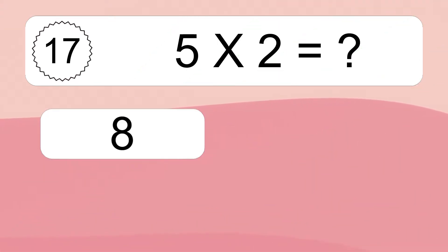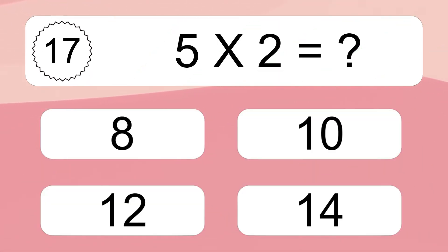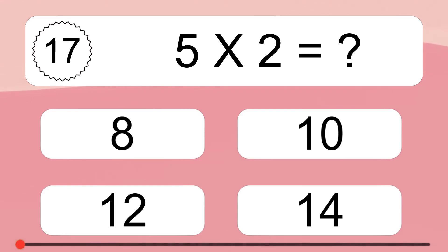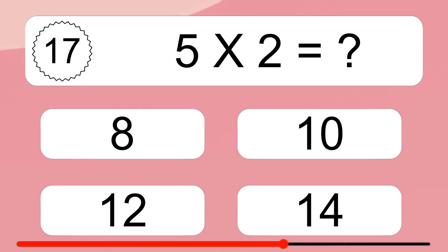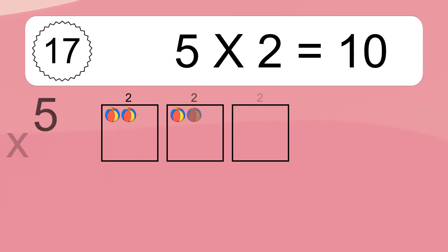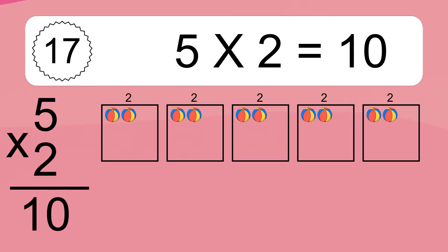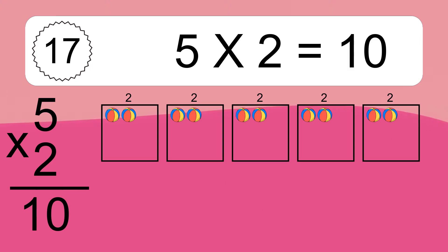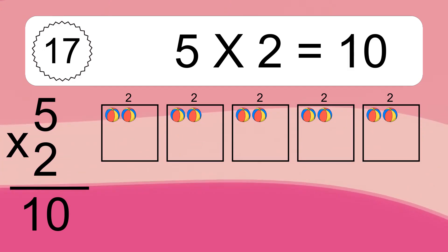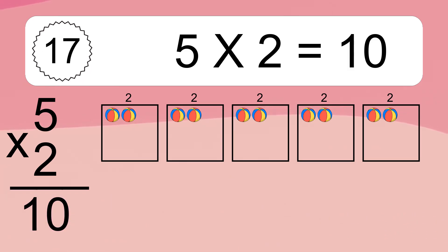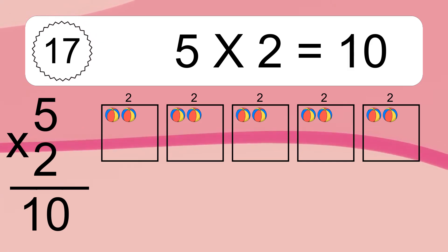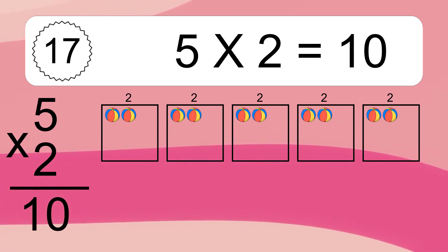5 times 2 equals what? 5 times 2 equals 10. We have 5 boxes, and each box has 2 colorful balls inside. If you count all the balls in all the boxes together, you will have 5 times 2 balls. This equals 10 balls.